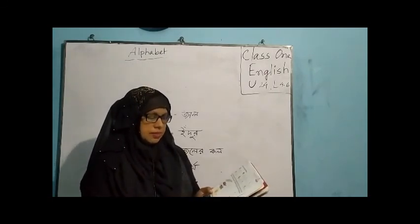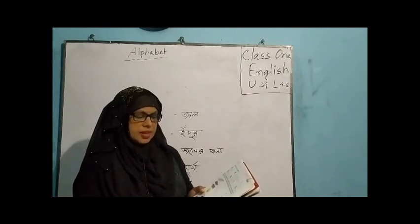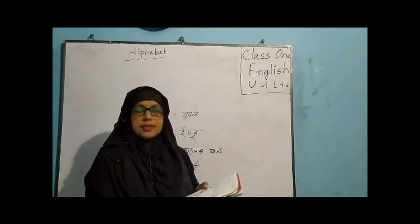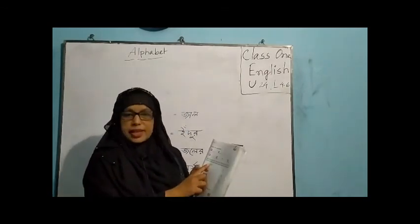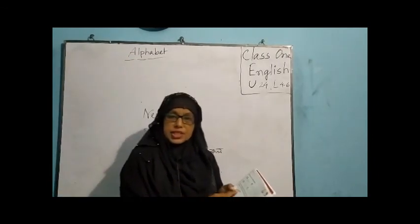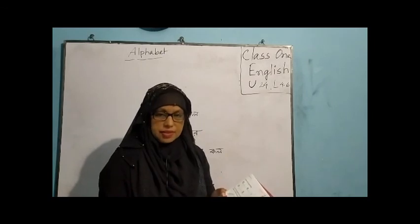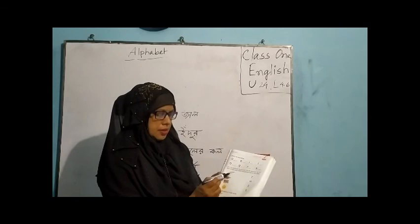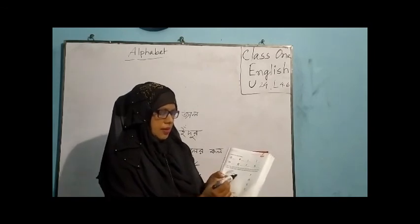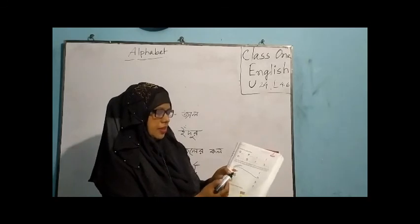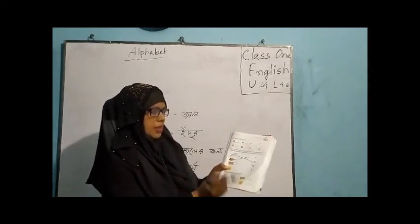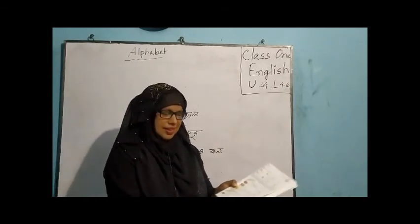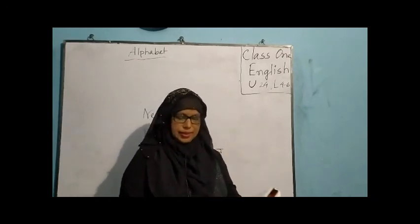Now you have to match the pictures with their first letters. Match the first letter of each picture's word. Net — N. Red — R. Tap — T. Sun — S. It's very easy. Thank you, students.